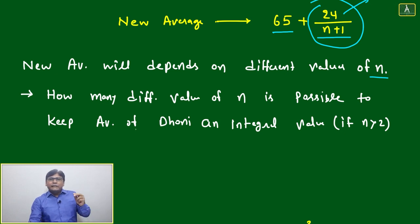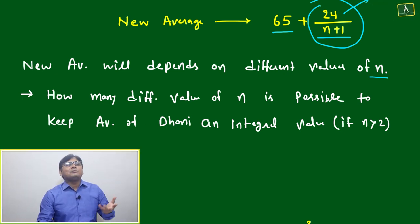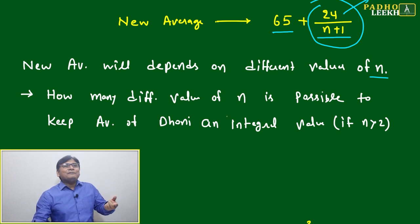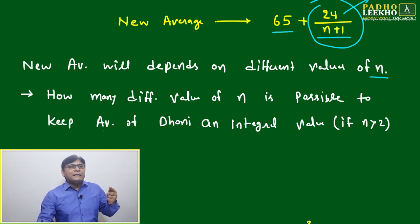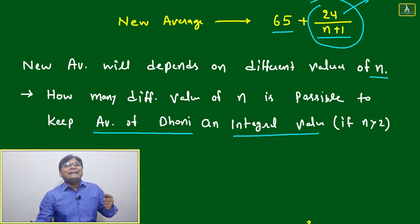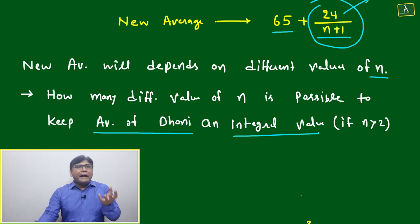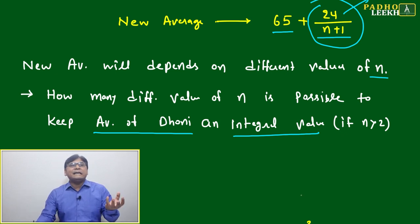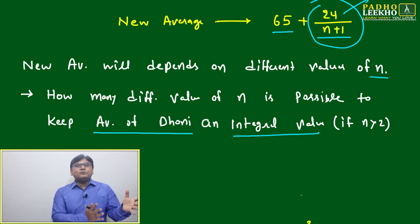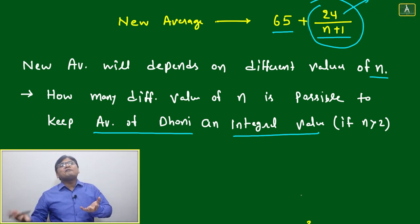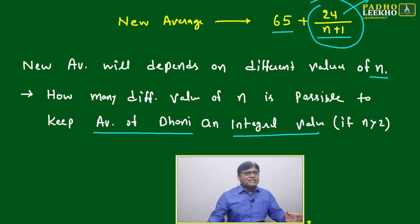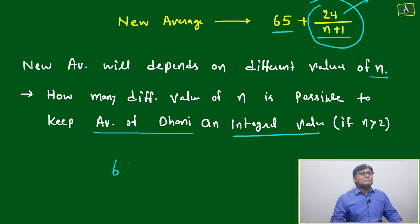Then how to identify this? We have to put conditions to understand how it will change. Now, how many different values of n are possible to keep the average of Dhoni an integral value? You need to find the different values of n, the number of innings, if the average is not becoming a fractional number.